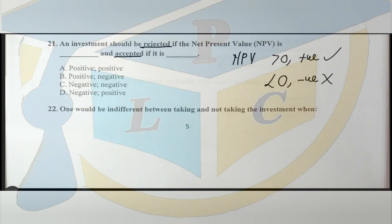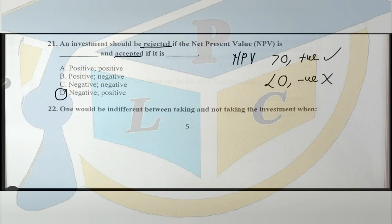Once you do the calculations for net present value, you get to know that this investment should be selected because the returns are going to be this and the cost that, or it should be rejected. That is the way it works for an investment appraiser. So option D: it should be rejected if it is negative and accepted if it is positive.